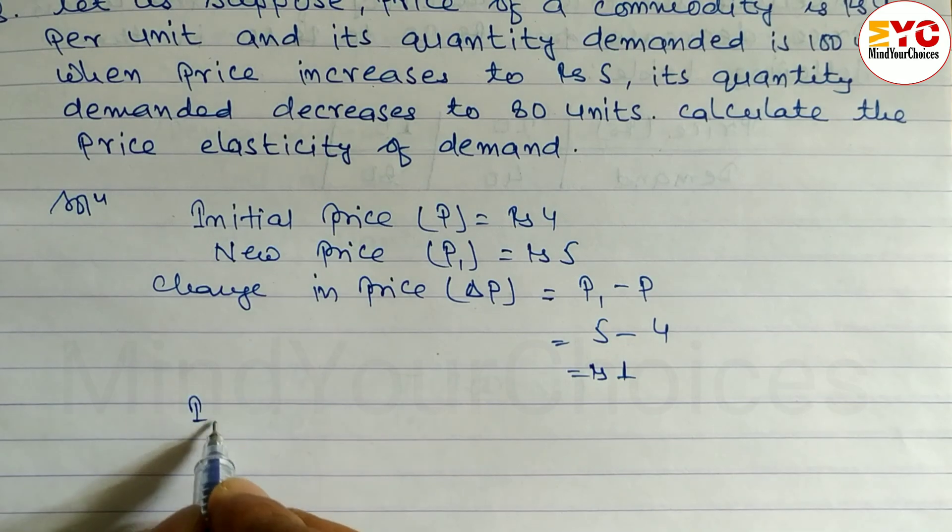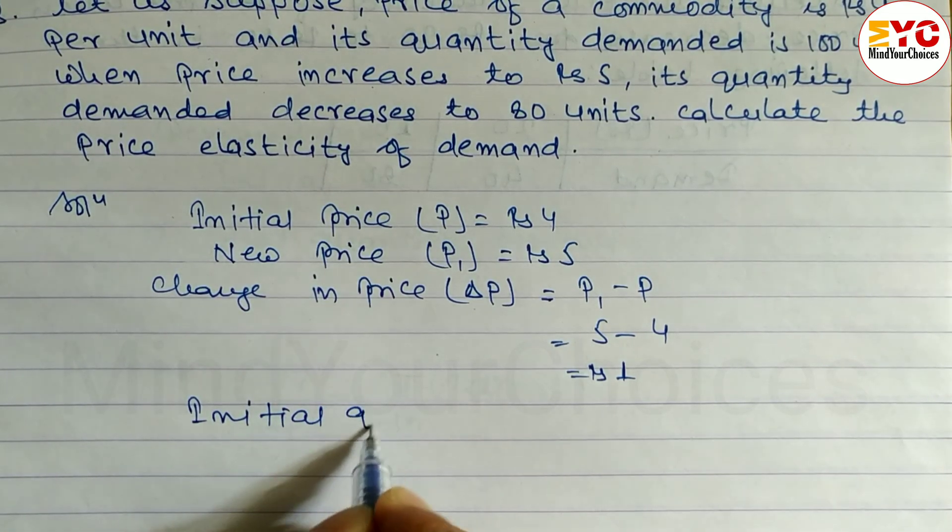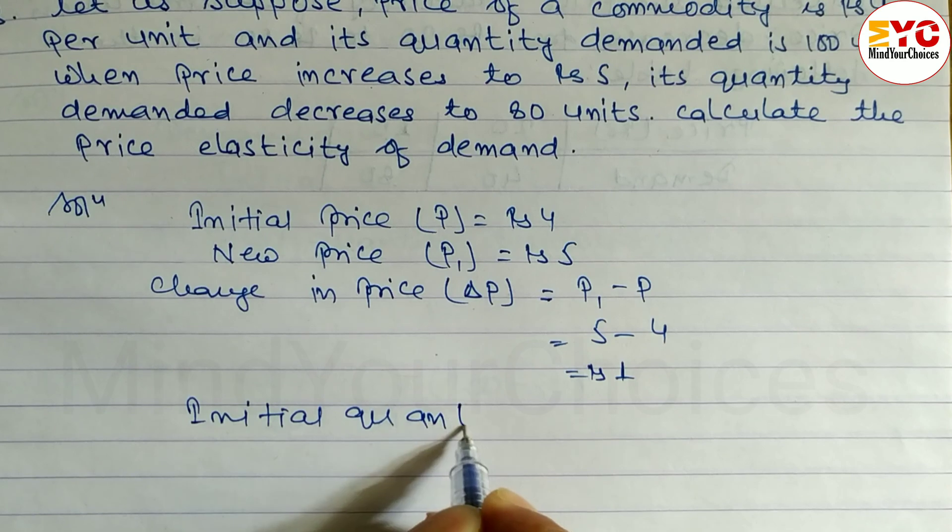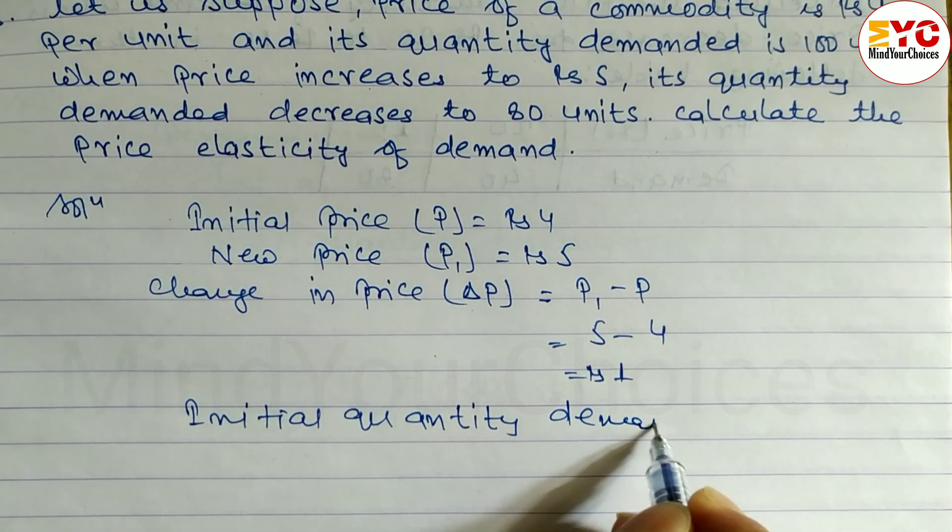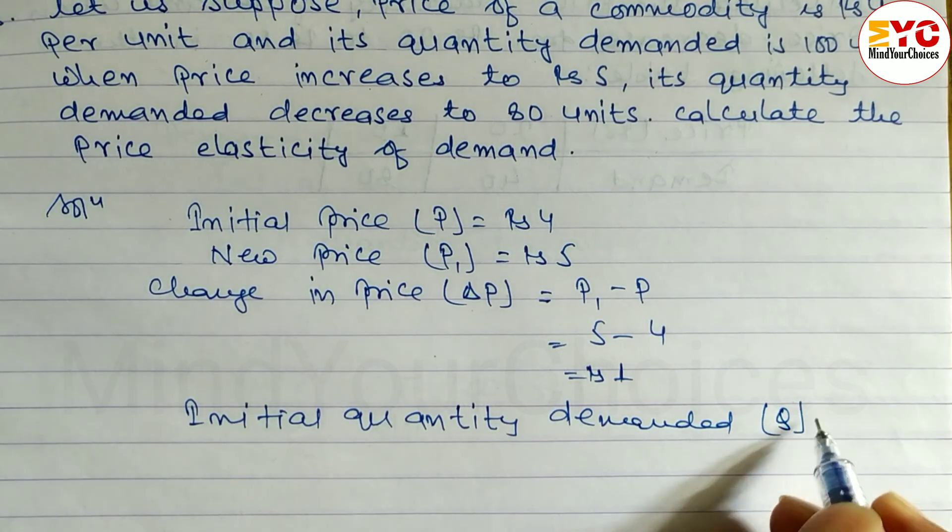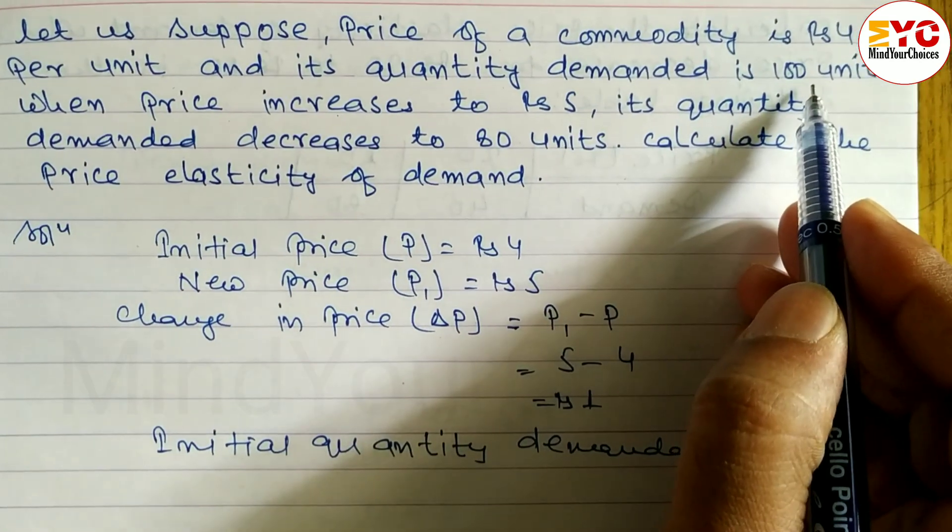Initial quantity demanded, denoted by Q, equals 100 units.